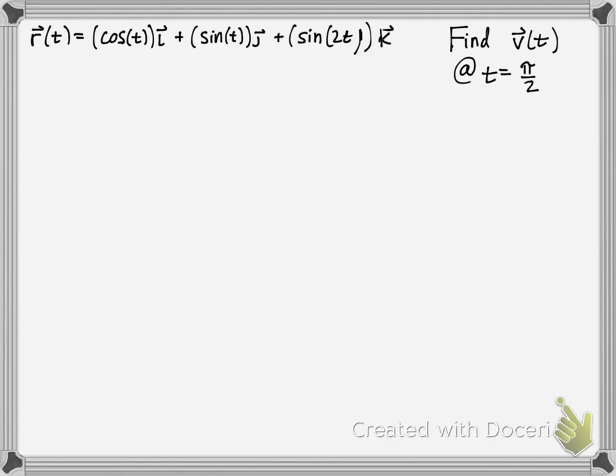Simply the derivative of position is velocity, or velocity is r prime in this case. So let's simply take the derivative of each component, the i, j, and k component.